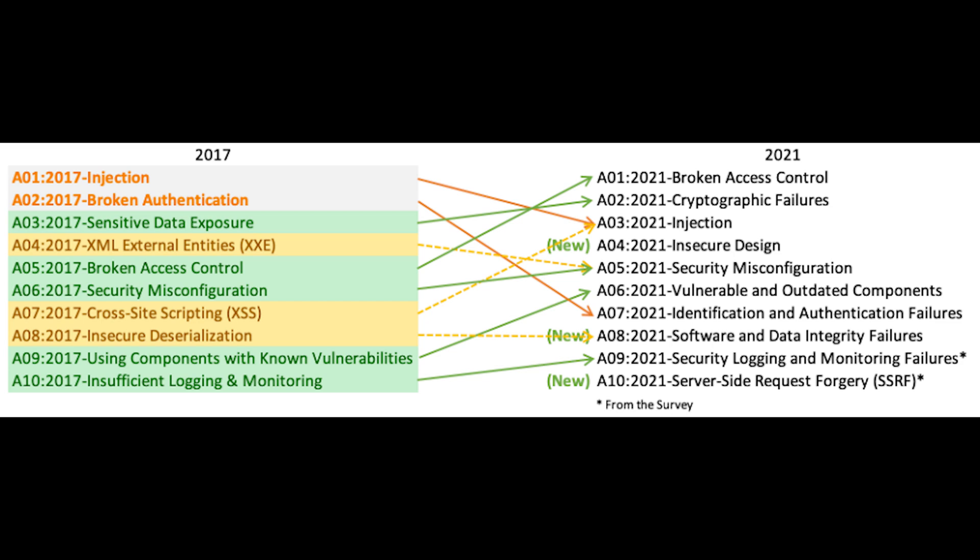Pen testing can detect missing authentication, but other methods must be used to determine configuration problems. Weak access controls and issues with credential management are preventable with secure coding practices, as well as preventative measures like locking down admin accounts and controls and using multi-factor authentication.